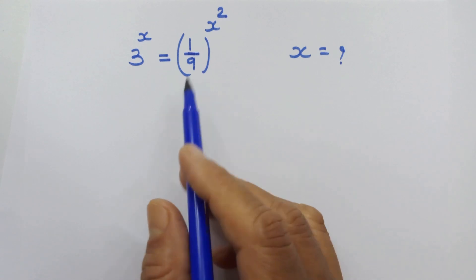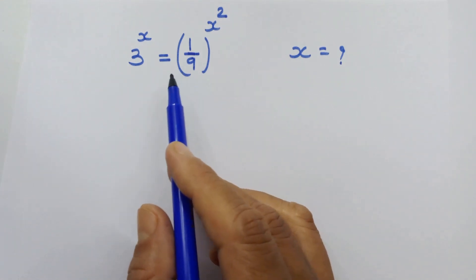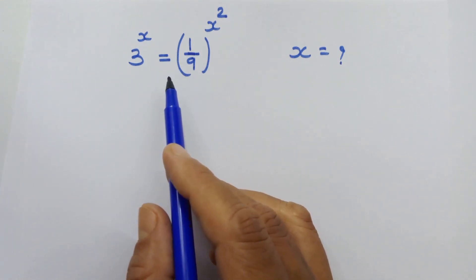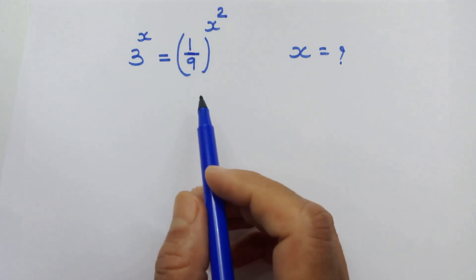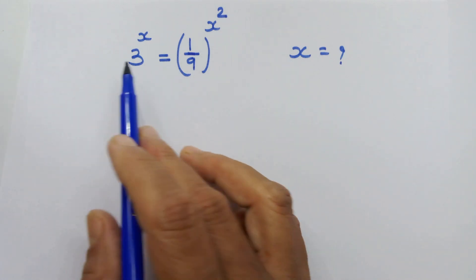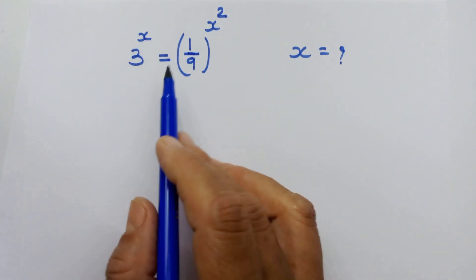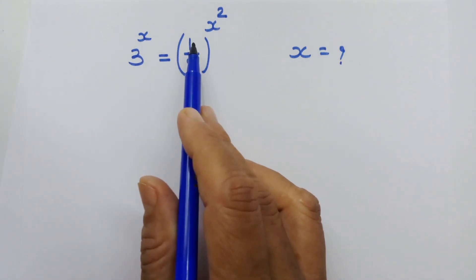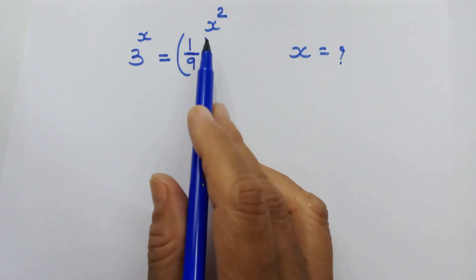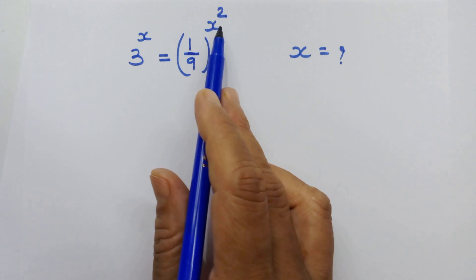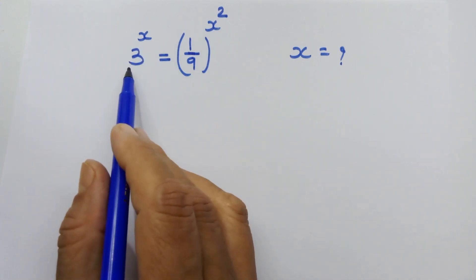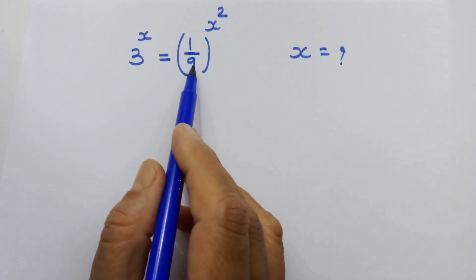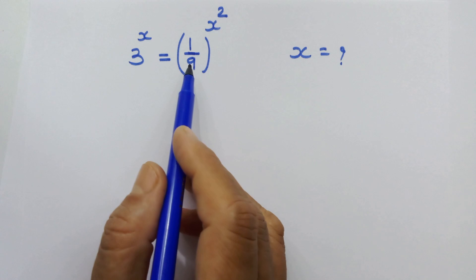Hello friends! Let's solve this beautiful exponential equation. We have 3 raised to x is equal to 1 upon 9 whole raised to x square, and we have 3 here and 9 here in the denominator.